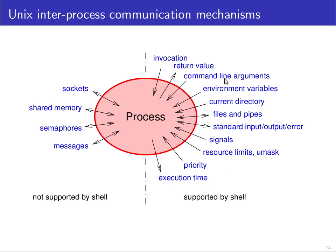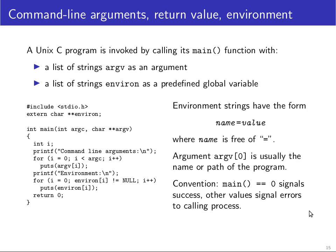To understand command line arguments and environment variables a bit better, it's useful to look at how a C programmer receives these, because C was the original system programming language. Pretty much every other programming language that runs on UNIX provides access to the same inter-process communication mechanisms that C programmers originally had.